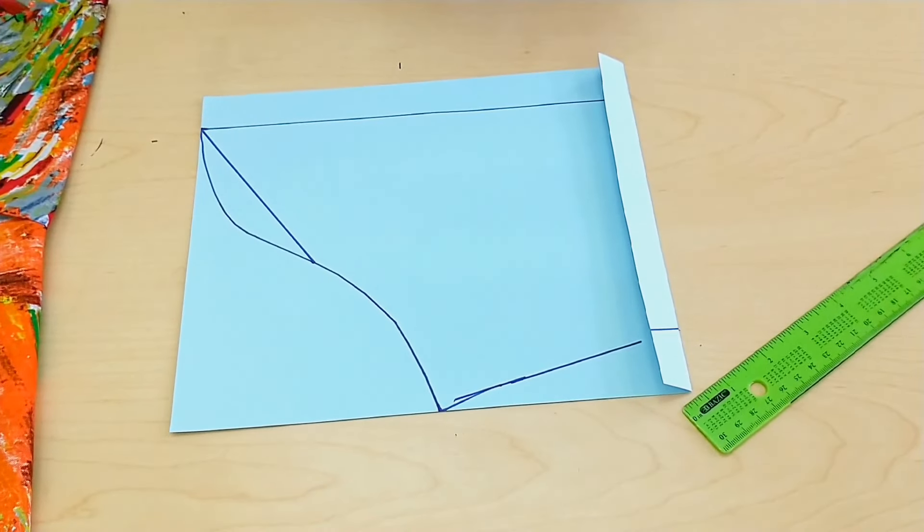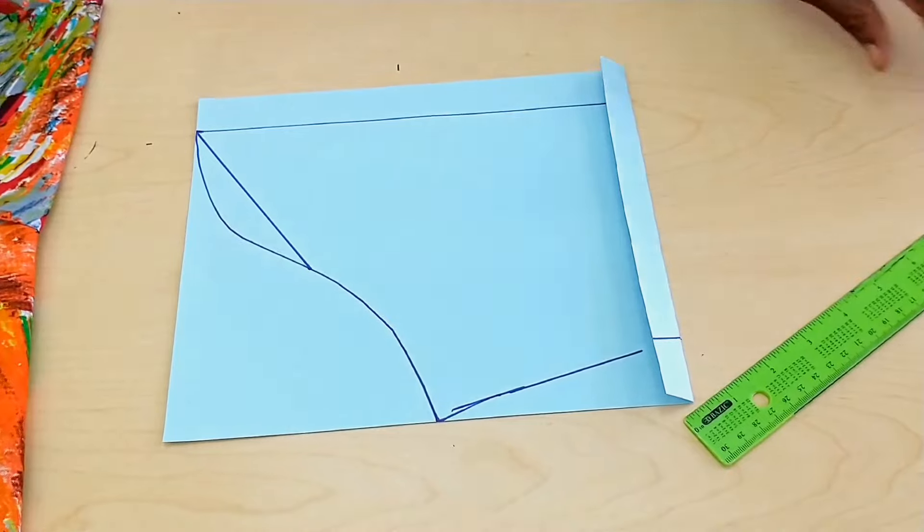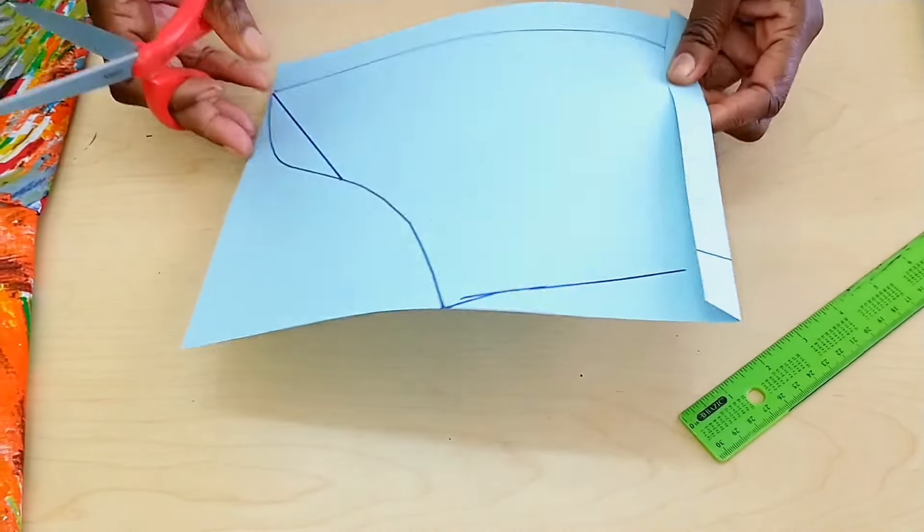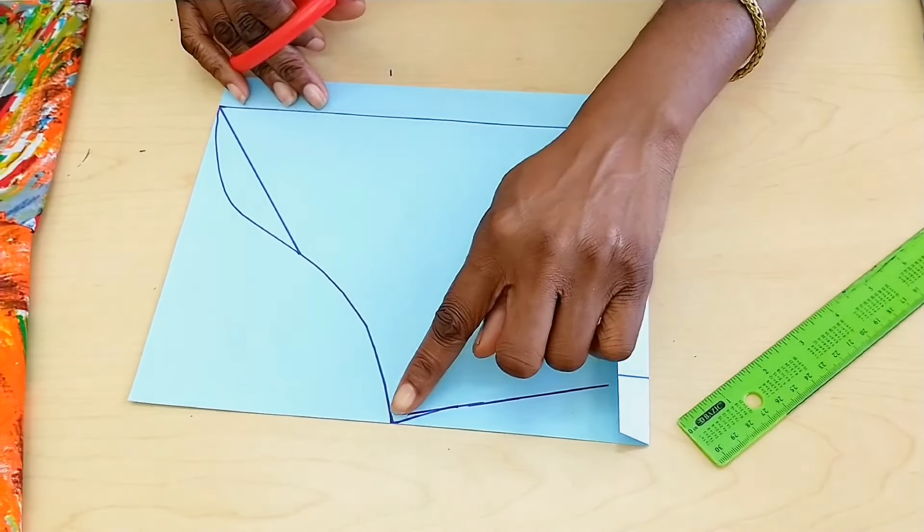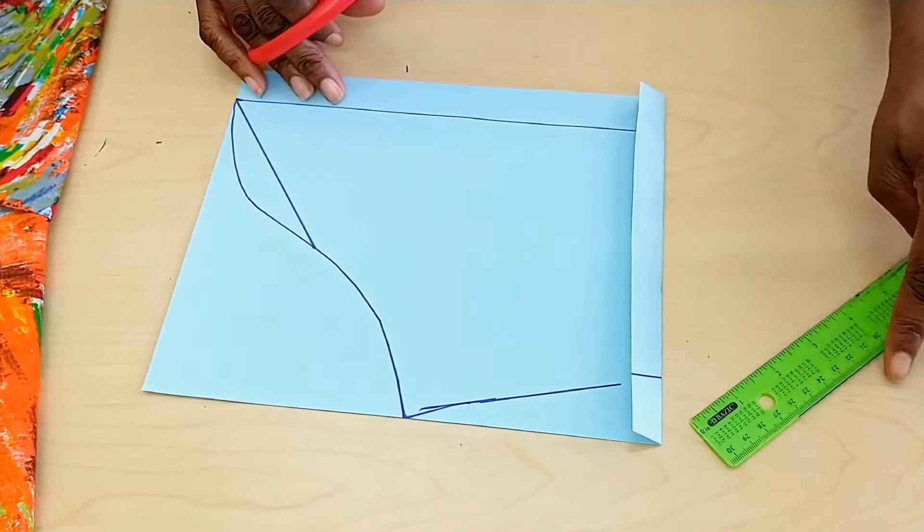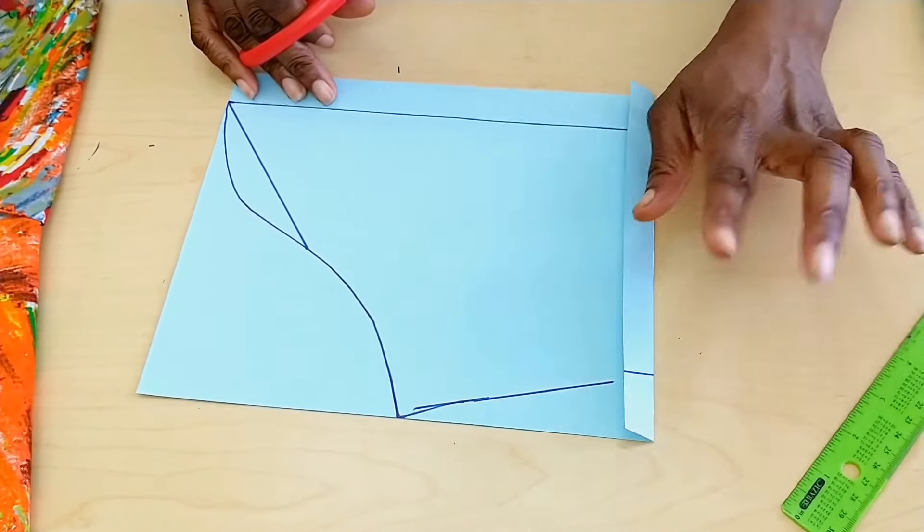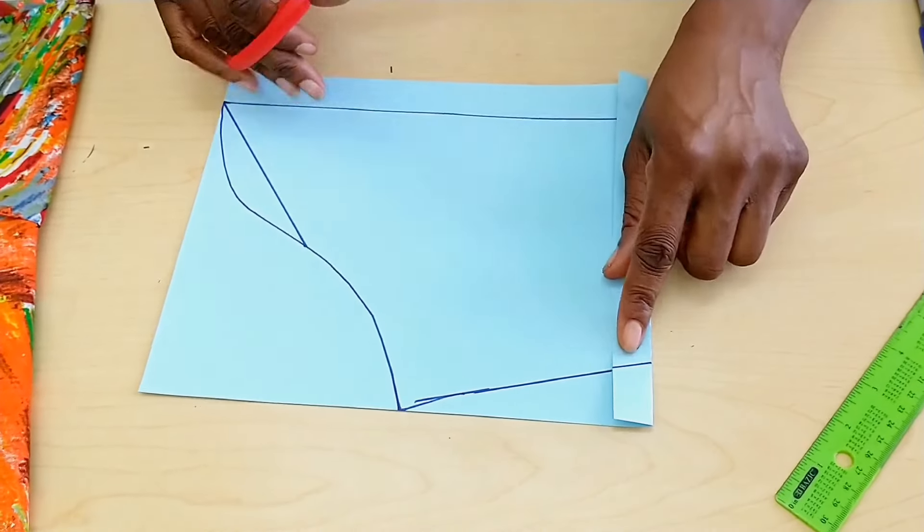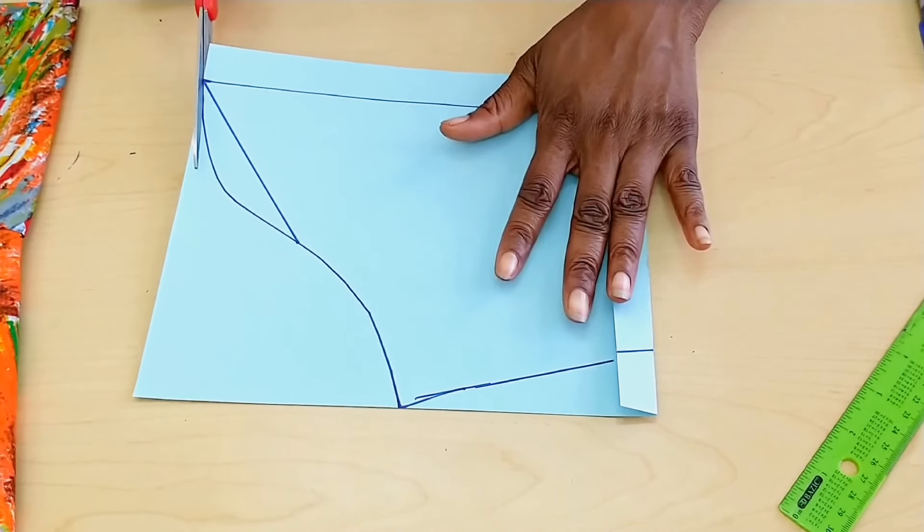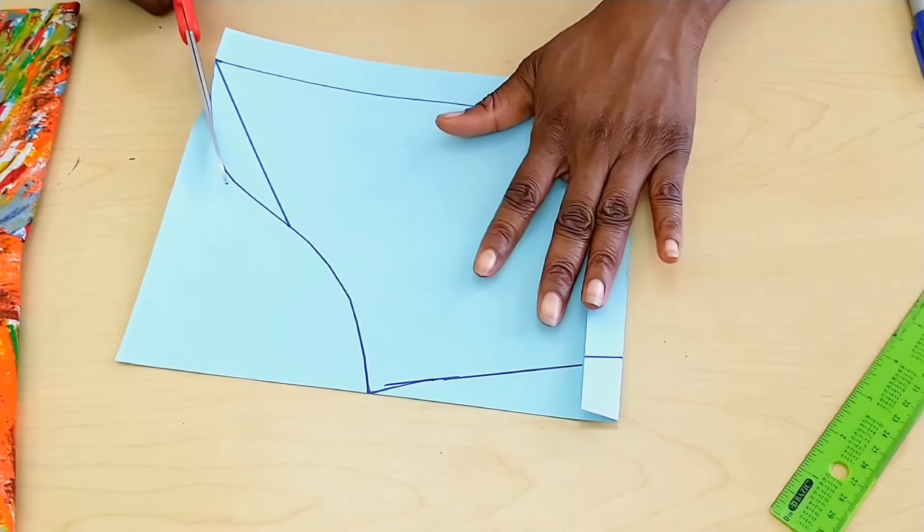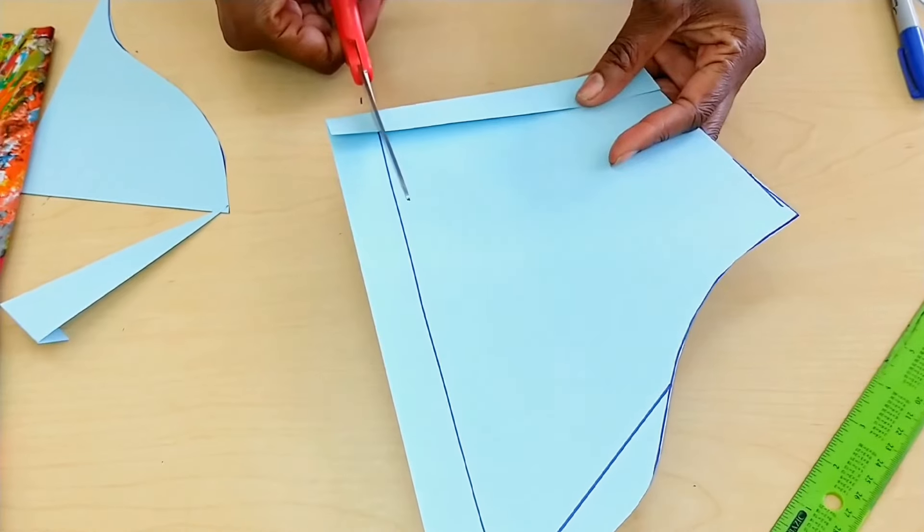And then we will cut. The reason for this, as I said, is because there is a slant. Now if your sleeve is going to be straight, then this is not necessary, but because there is going to be a slant, to prevent difficulty when you are actually completing your hem, you fold it so it will be easier when stitching.